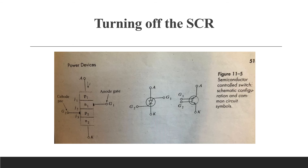If we move below the critical value called the holding current, we can turn the SCR off. This critical value of holding current is required to maintain alpha1 plus alpha2 equal to 1, which keeps the sum of the current transfer ratios of both transistors equal to 1.